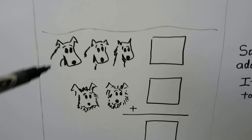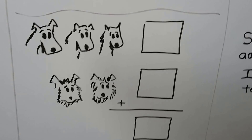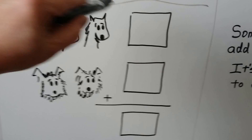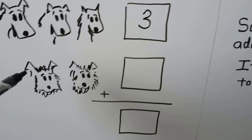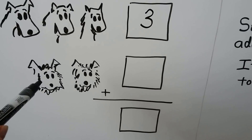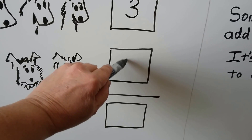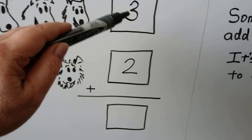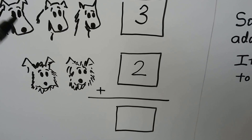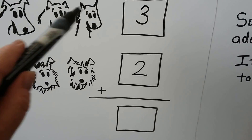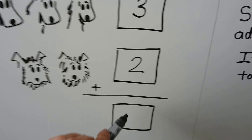Here we have three dogs — one, two, three. We can put our three in this box. There's two more dogs — one, two. Three plus two is equal to one, two, three, four, five. Five dogs.